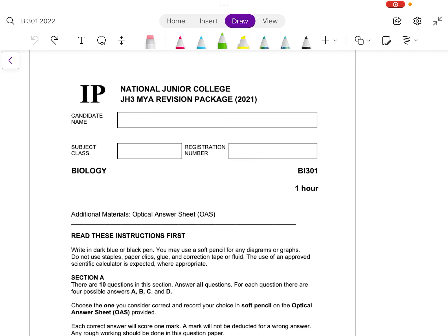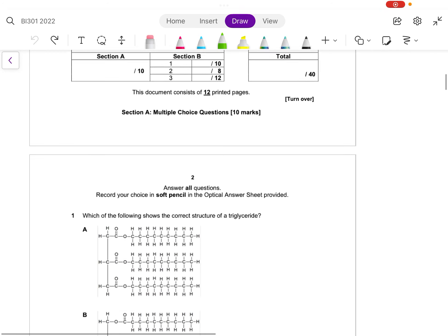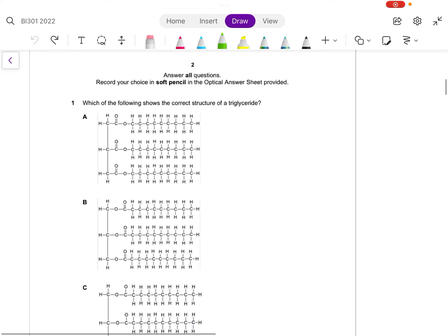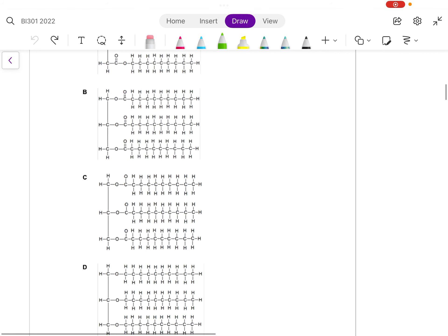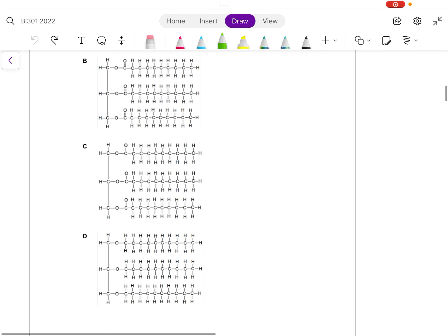Hello, I'll now be going through the MCQs of 2021. Let's begin with question one: which of the following shows the correct structure of a triglyceride? Now if you look across the structures, there will be two that you can cancel out immediately.